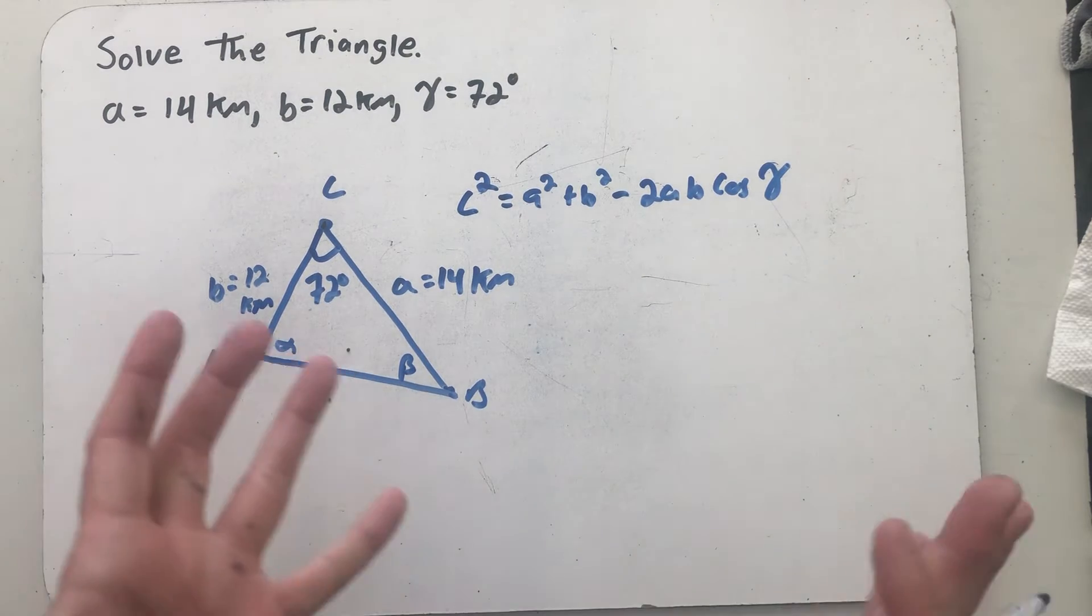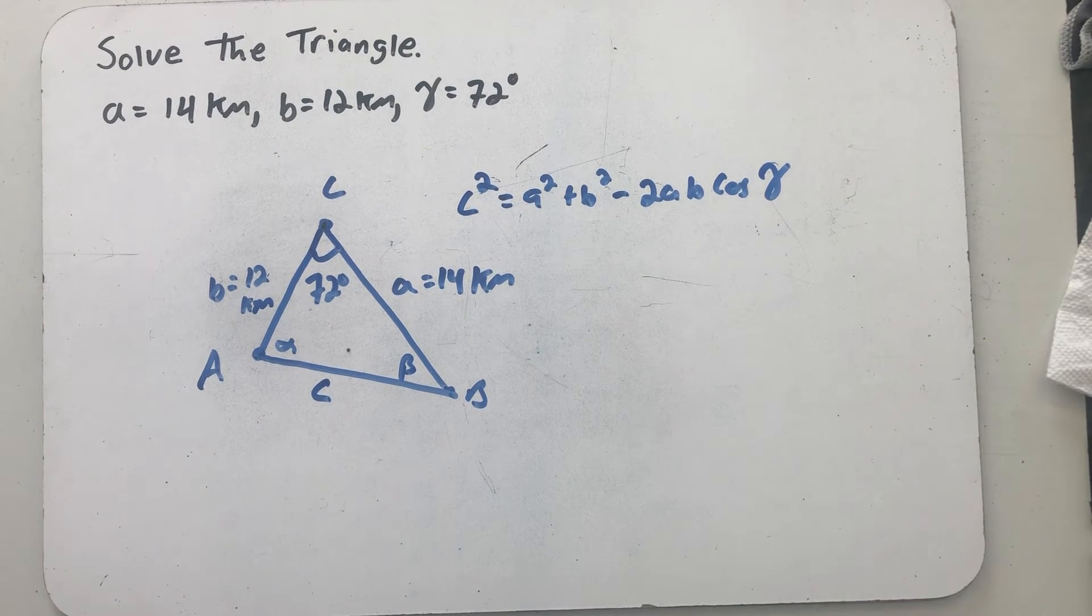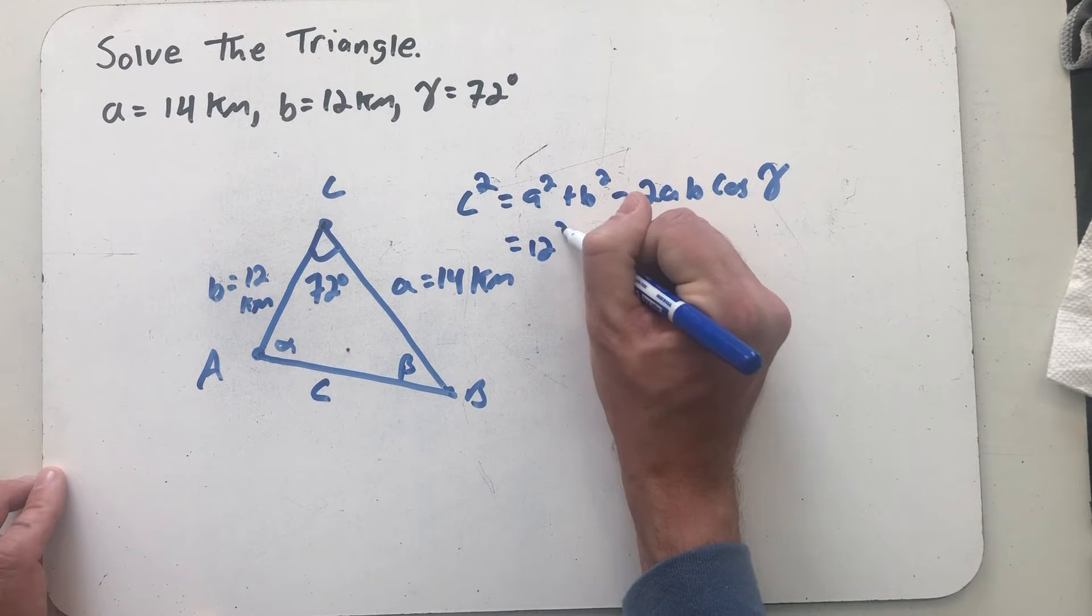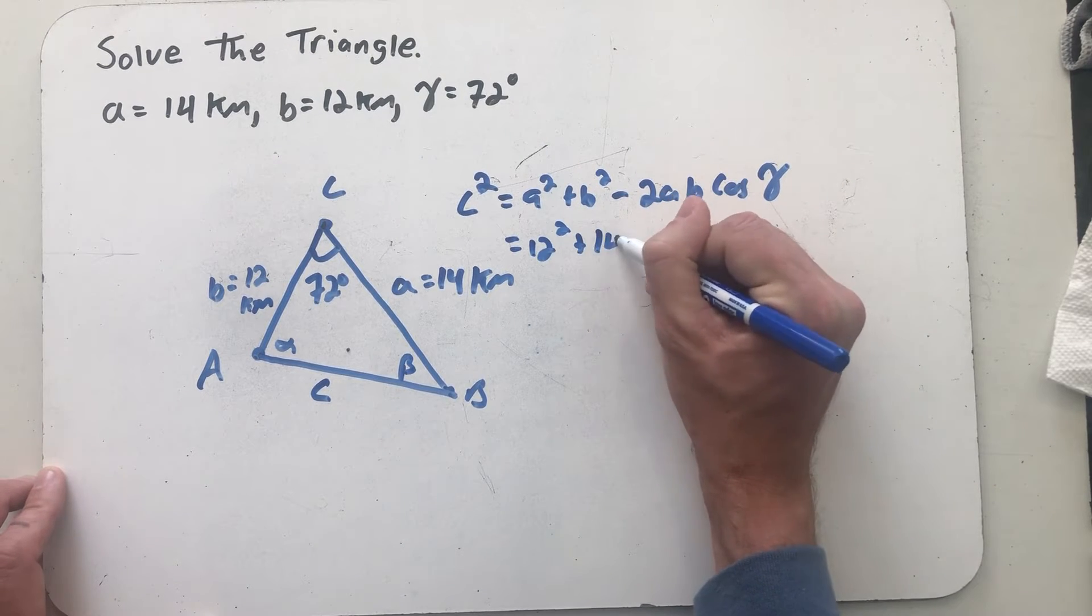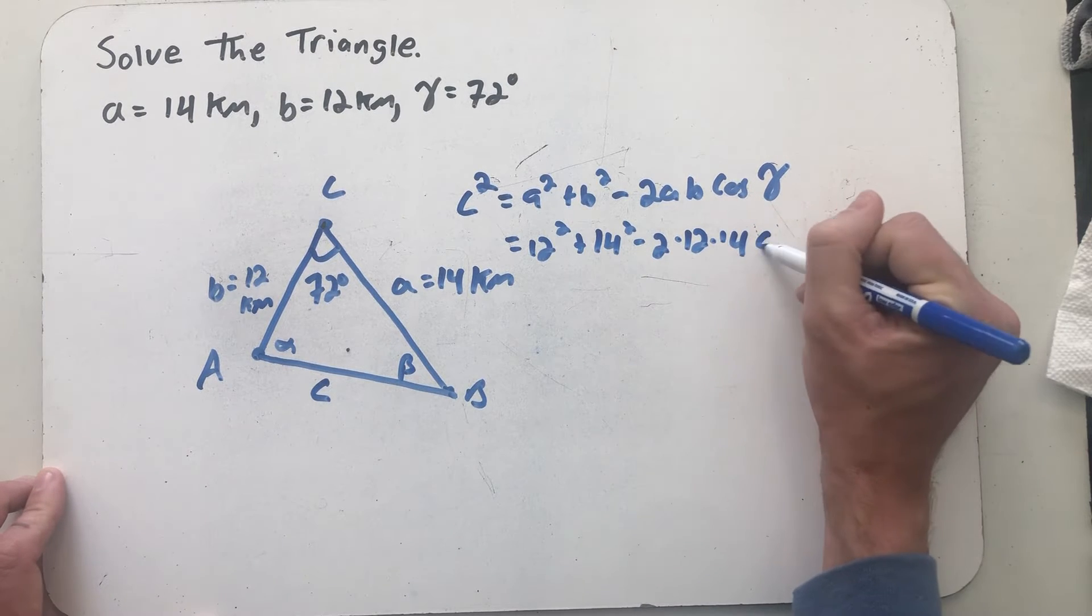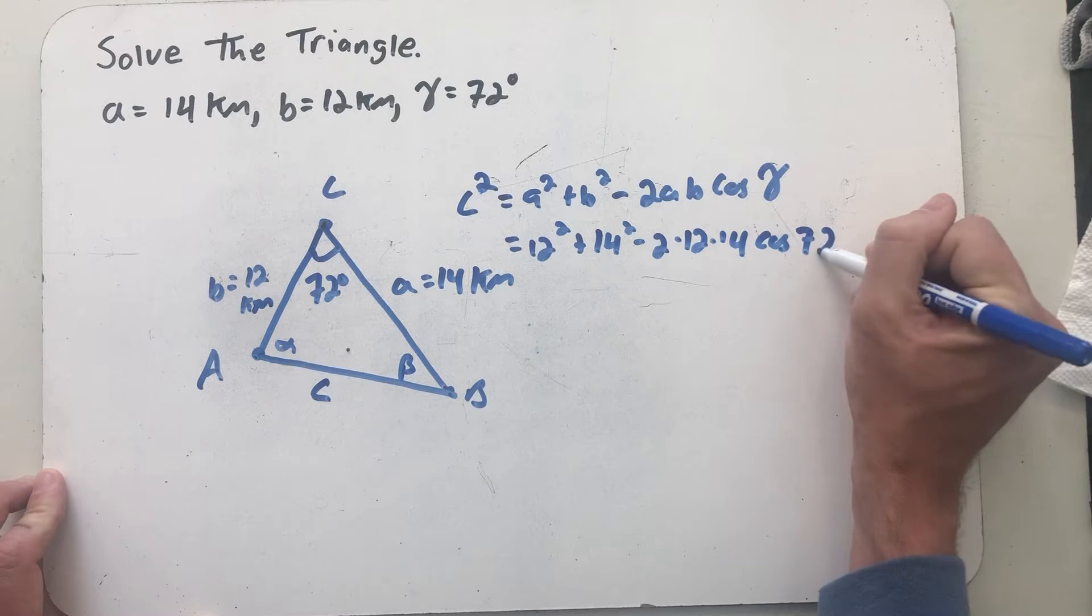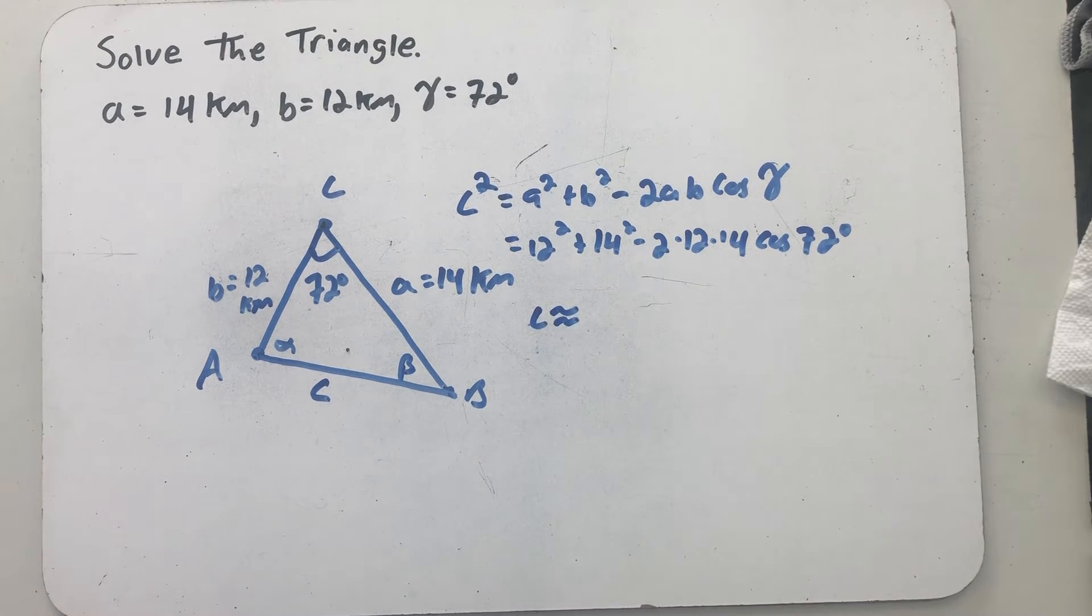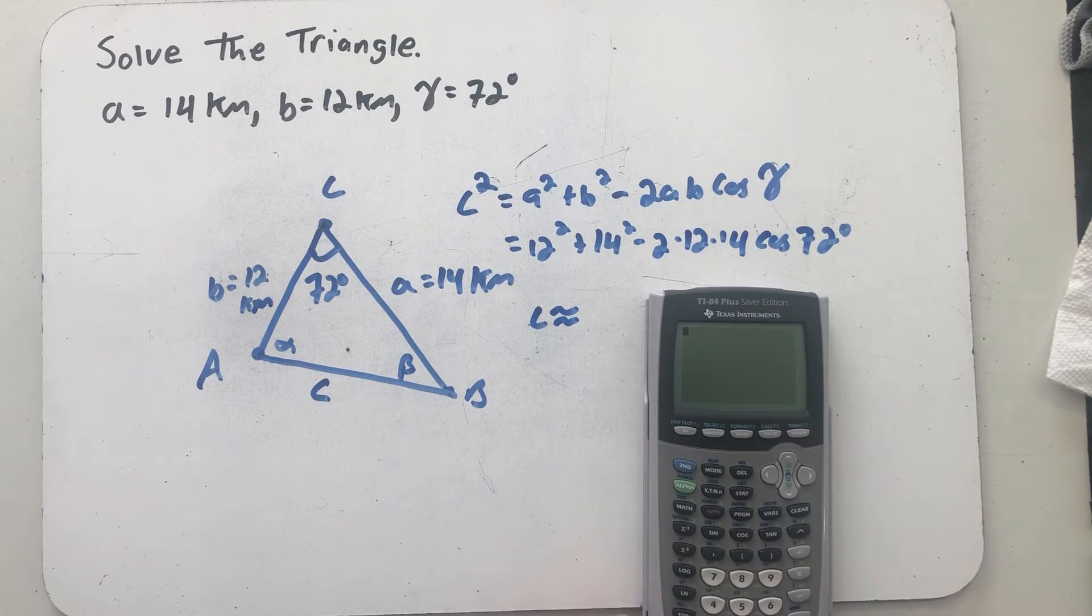So plug in what we know and we will find C squared, take a square root, and we will know C. 12 squared plus 14 squared minus 2 times 12 times 14 cosine of 72 degrees. I'm going to use my TI-84 to do all of that, take a square root at the end, and I will know what C is.